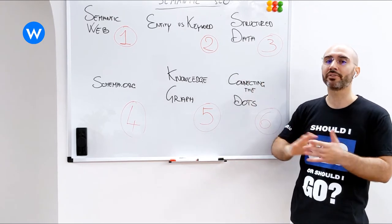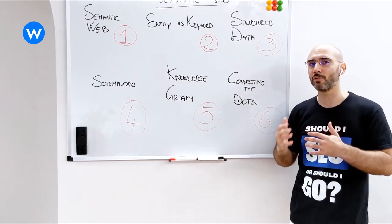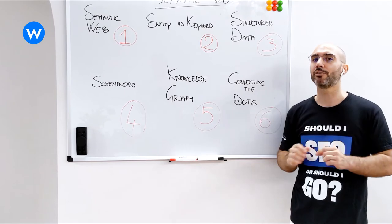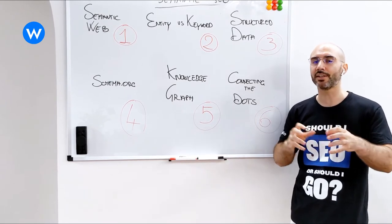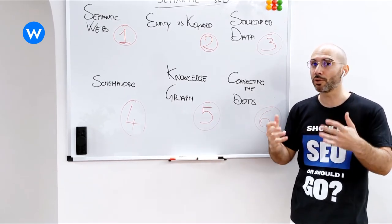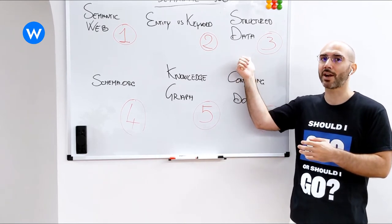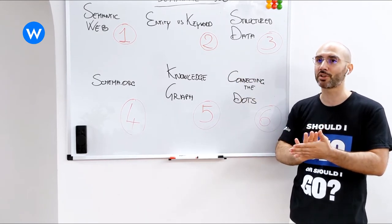And then with structured data, we saw how we transform text, which is something that humans can understand but machines try to understand with implicit signals. It's way easier for us to just translate this content for machines.